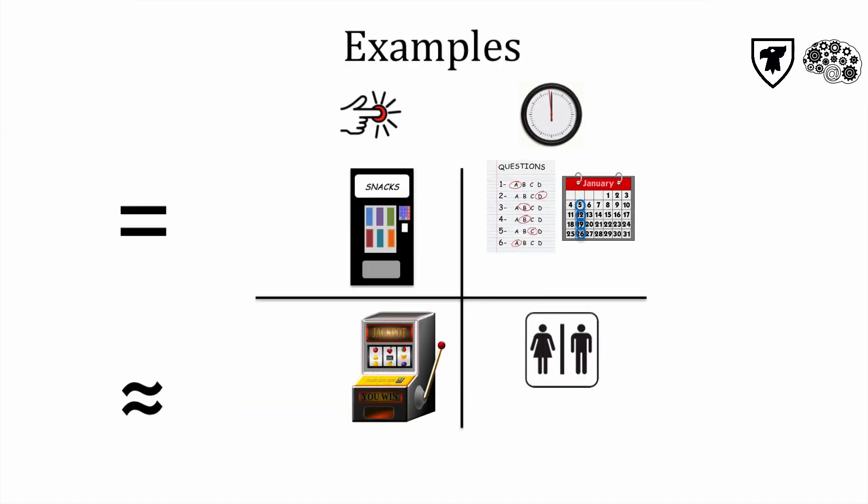Some real-world examples of these four schedules are shown here. A vending machine, here on the top left, operates on a fixed ratio schedule, with every response, inserting money, rewarded with a tasty snack. This is an FR1, which is actually the same thing as a continuous reinforcement schedule. The number of responses under a fixed ratio can be greater than one, like a kid needing to take 20 bites of supper before getting ice cream for dessert. This would be an FR20.